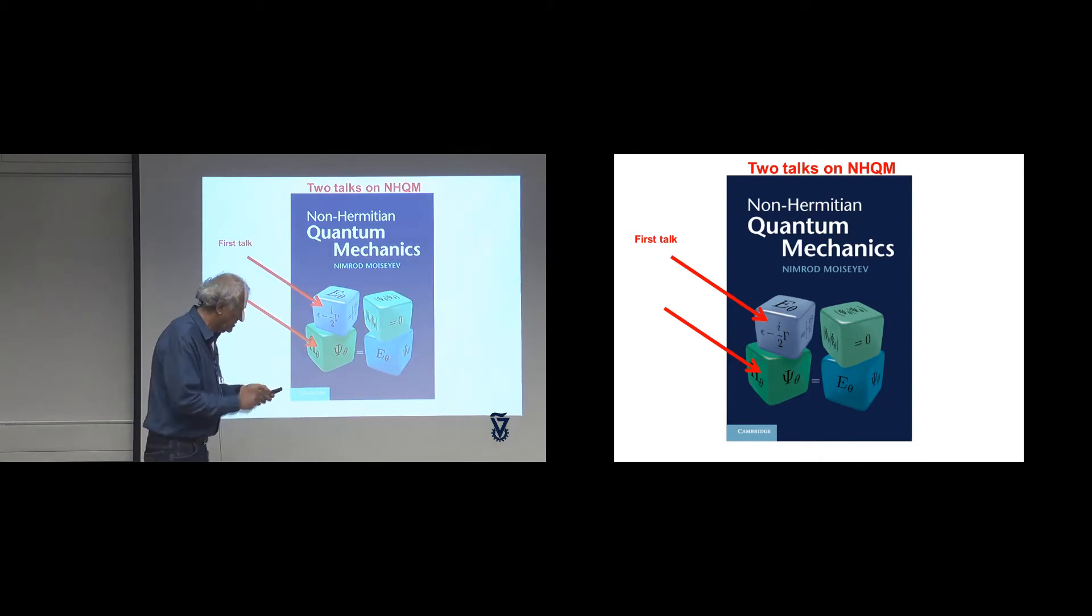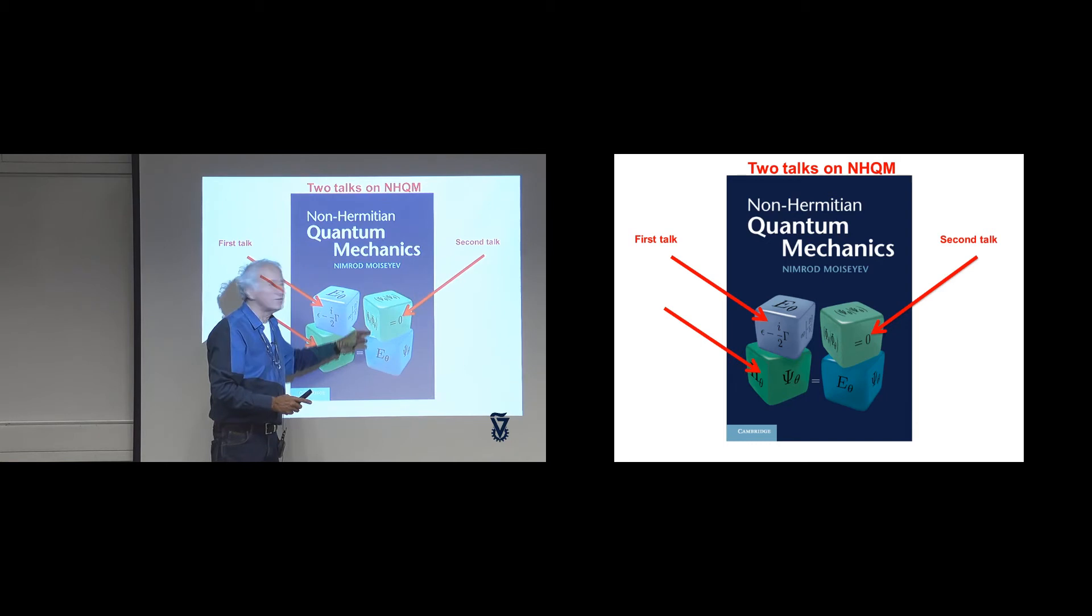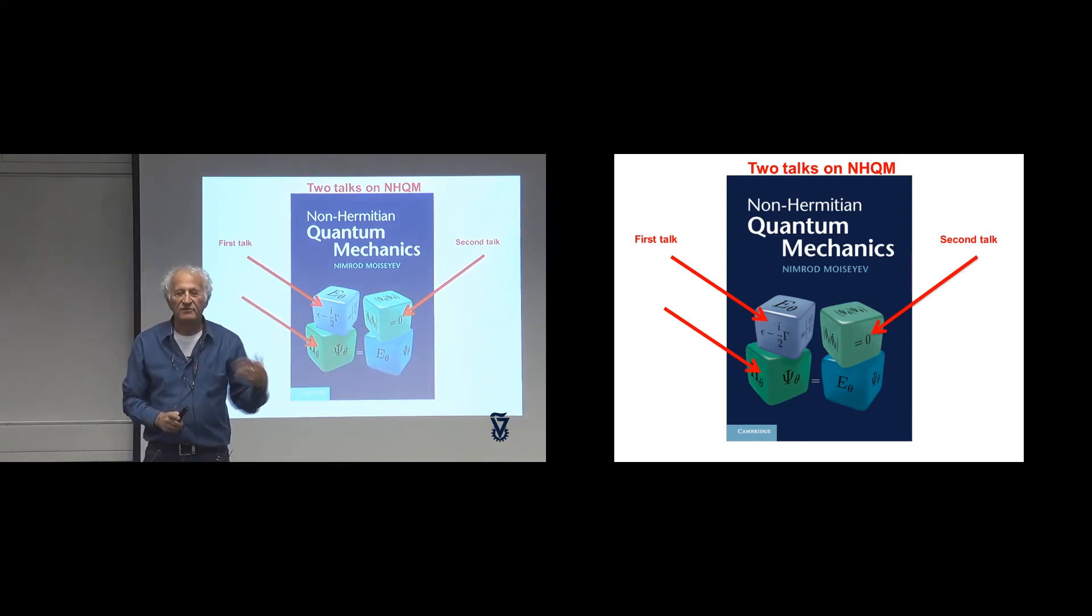And then the next talk will be on this cube. It's written that the inner product can give you that the wave function is orthogonal to itself. How did it happen? It cannot happen in standard quantum mechanics. In non-Hermitian quantum mechanics, it may happen. It doesn't have to happen, but it may happen.